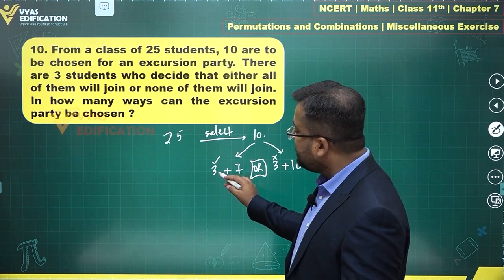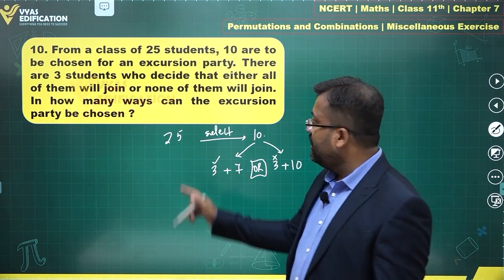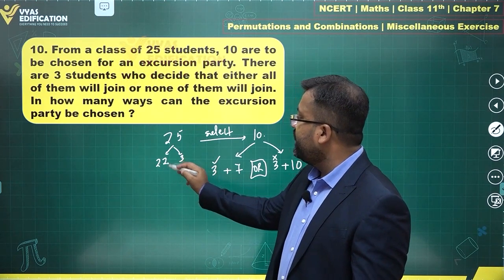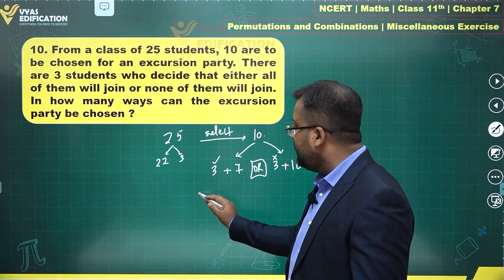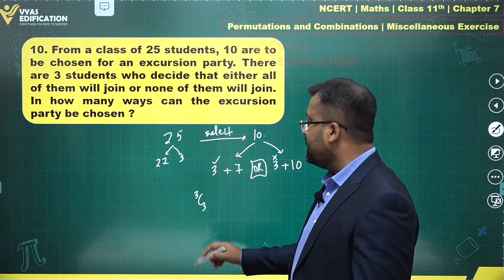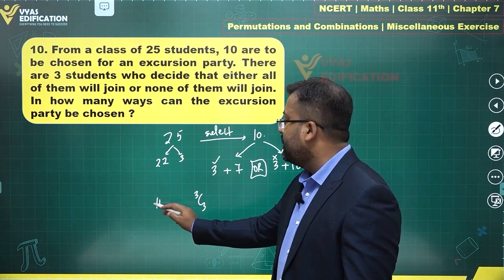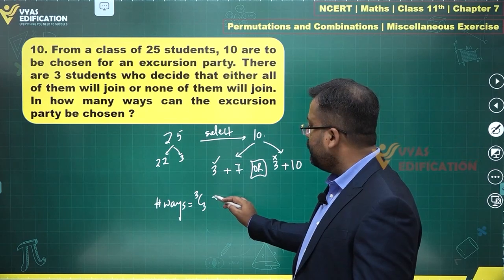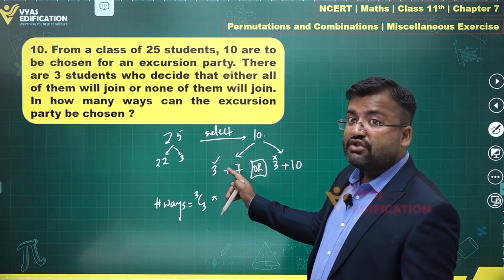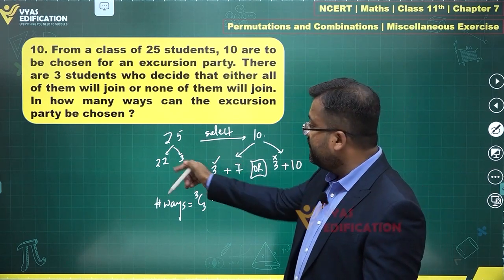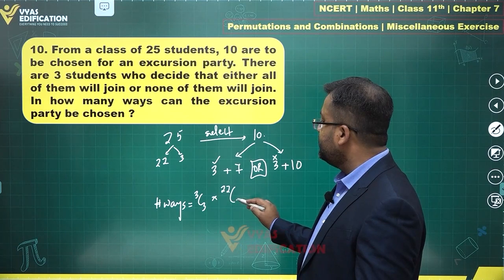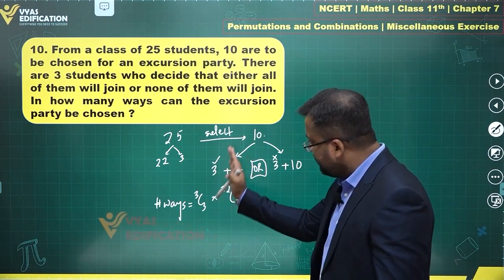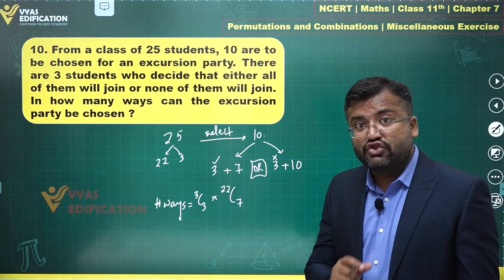If you have selected those three people, out of 25 there are three and the remaining 22. Selecting three out of three is 3C3 ways, so the number of ways will be 3C3 multiplied by selecting seven out of the remaining 22, which is 22C7. That's the number of ways for this particular case when those three are chosen.